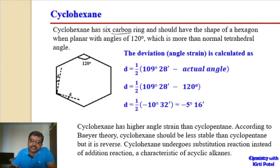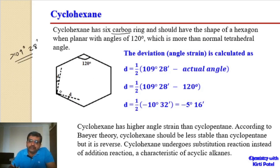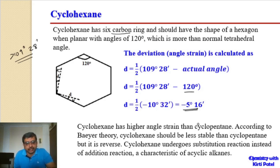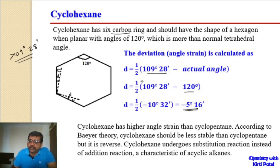For cyclohexane, bearing six carbon atoms, if taken as a planar molecule the angle would be 120 degrees, which is higher than 109° 28'. The deviation becomes ½ × (109° 28' − 120°) = −5 degrees 16 minutes — a negative deviation. According to Baeyer's strain theory, this negative angle strain predicts that cyclohexane should not be stable and should not exist at all. Similarly, cycloheptane and higher cycloalkanes would also have negative deviations.